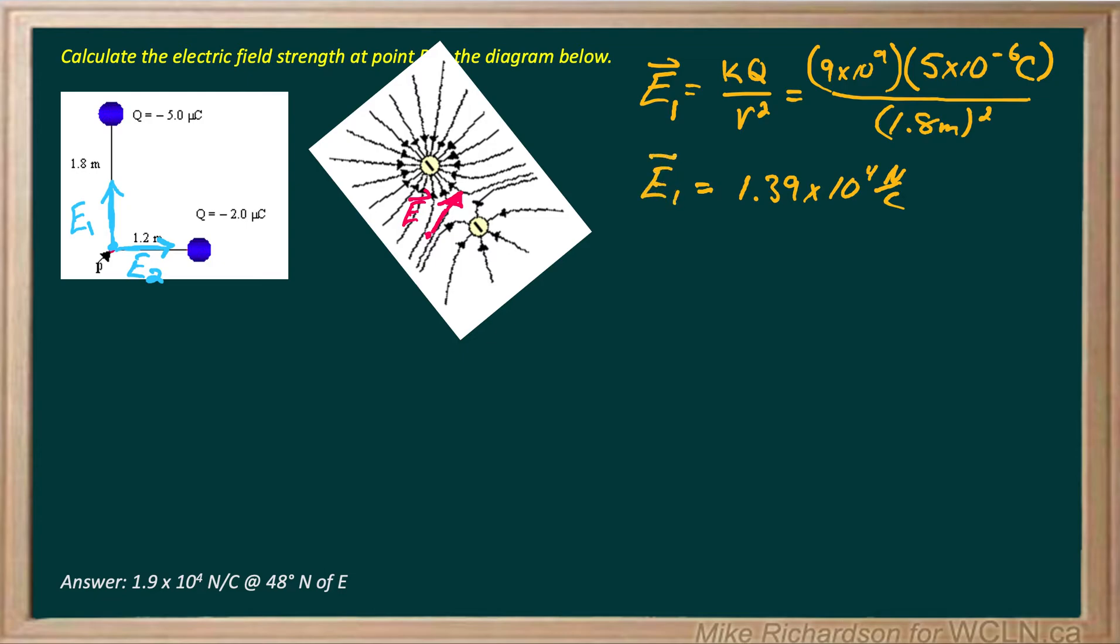Now I can do the same thing with E2. E2, KQ2 over R squared. So again, 9 times 10 to the 9, coulombs constant, times 2 times 10 to the negative 6. And its distance is 1.2 meters. And when I run that through my calculator, I get 1.25 times 10 to the 4 newtons per coulomb.